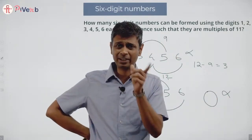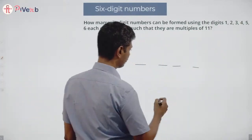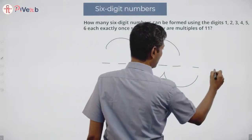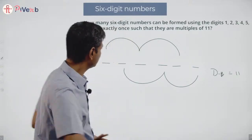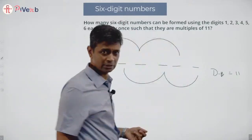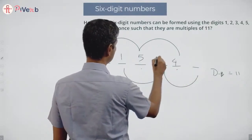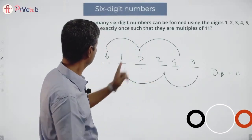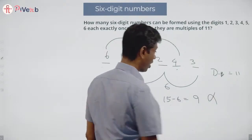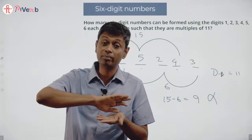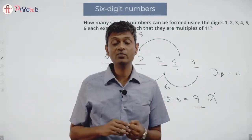Zero is not possible because 21 is an odd number — I cannot break it into two equal parts. Maybe the difference could be 11. I want 1, 2, 3, 4, 5, 6 split so one group minus the other equals 11. For that, three digits should be as high as possible and three as small as possible. Put 6, 5, 4 on one side and 1, 2, 3 on the other: 6+5+4 = 15, 1+2+3 = 6. 15 minus 6 is only 9 — still not 11. So the difference can never be 11 either.